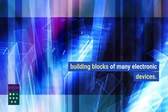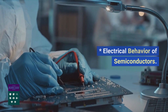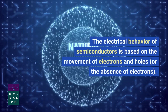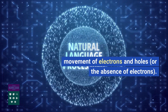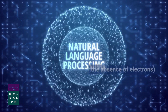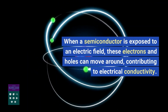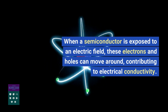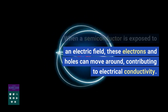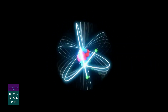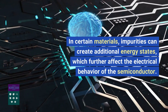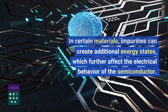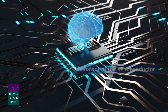The electrical behavior of semiconductors is based on the movement of electrons and holes, or the absence of electrons. When a semiconductor is exposed to an electric field, these electrons and holes can move around, contributing to electrical conductivity. In certain materials, impurities can create additional energy states, which further affect the electrical behavior of the semiconductor.